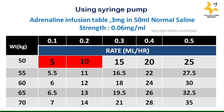Here is an adrenaline infusion reference table, calculated using 3 mg in 50 ml normal saline, giving a concentration strength of 0.06 mg per ml. The highlighted values are those obtained from Examples 1 and 2: at 0.1 micrograms/kg/min with 50 kg body weight the rate is 5 ml/hour, and at 0.2 micrograms/kg/min with 50 kg body weight the rate is 10 ml/hour. This table can be used for syringe pump and infusion pump settings.